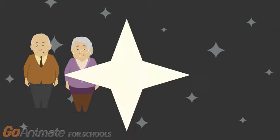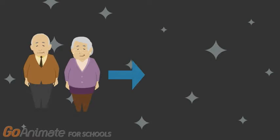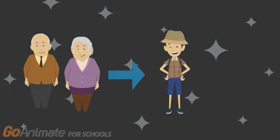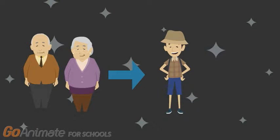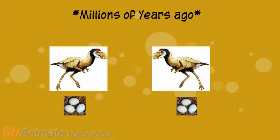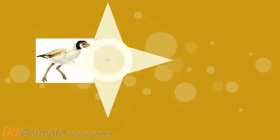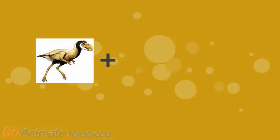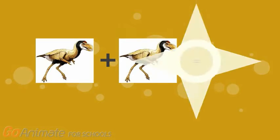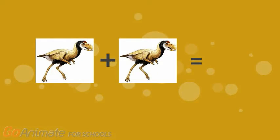Just like people kind of look like their grandparents, they don't look exactly alike. This is true for chickens too, as they look different from their ancestors. Let's call the chicken's grandparents the proto-chicken. As you can see, the proto-chicken isn't exactly our modern-day chicken.